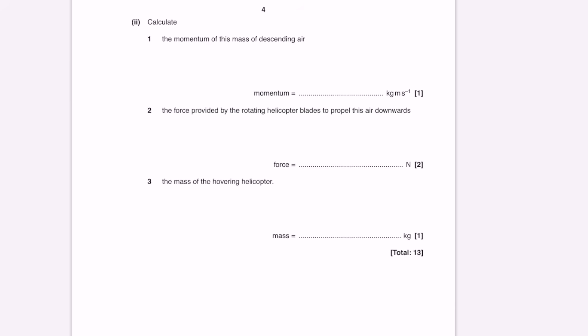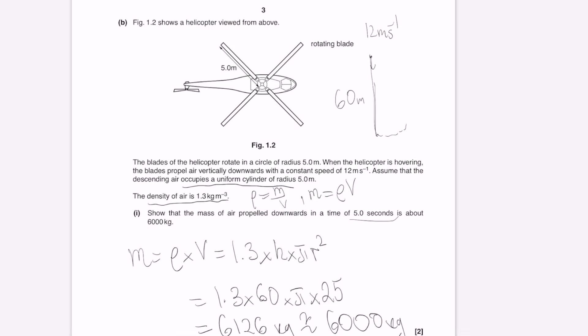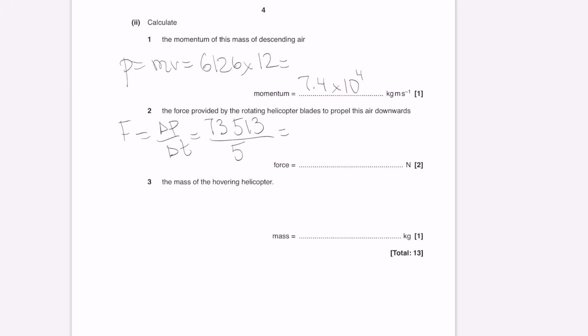The momentum of this mass of descending air. Momentum is just mass times velocity. This will be 6126 multiplied by the speed, which was 12, to get around 7.4 times 10 to the power of 4 kilograms meters per second. We can find the force provided by the rotating helicopter by using Newton's second law that the net force is equal to the rate of change of momentum. This is going to give us our previous change of momentum, 73513, and then I'm going to divide this by the time, which was 5 seconds. These questions are so much easier once we think of them as simply modeling a cylinder of mass. This gives us 14,700 newtons.